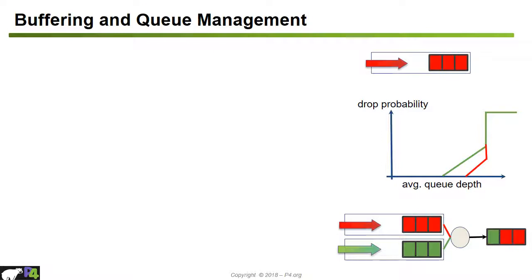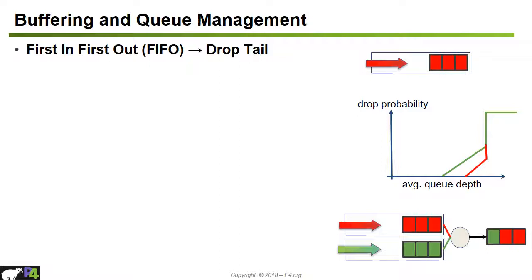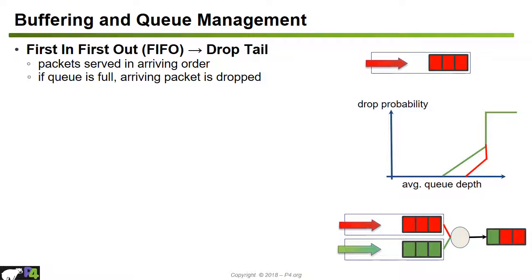Another job of the data plane is managing buffers and queues. When multiple packets arrive destined for the same port and the aggregate arrival rate exceeds the port's serving capacity, queues build up. The simplest way to manage this is to serve packets in arrival order — first in, first out, also called a FIFO queue or drop-tail. If the queue is full, any arriving packet is dropped.